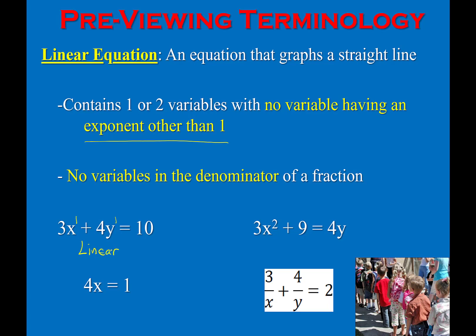The second example is non-linear because we have a variable whose exponent is something other than 1. The third example, 4x equals 1, is linear even though there is no y variable — that's not a requirement. If we graph this we get a vertical line; the variable's exponent is 1 and there are no variables in the denominator. The last example is non-linear because we have variables in the denominator of a fraction.